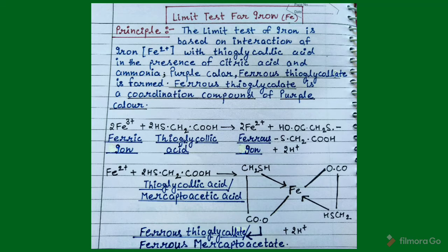To perform the limit test for iron, we have two nessler cylinders — one for the preparation of the test solution and another for the preparation of the standard solution. The limit test for iron is carried out in the presence of thioglycolic acid, which acts as a reducing agent.